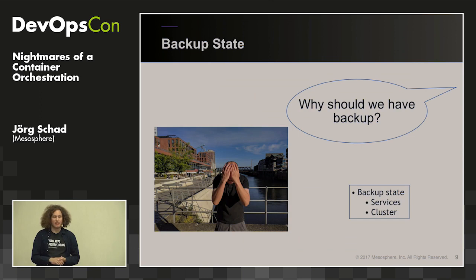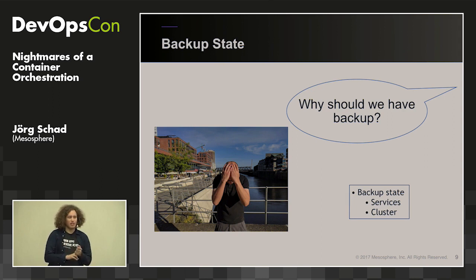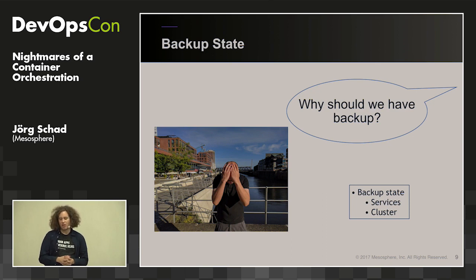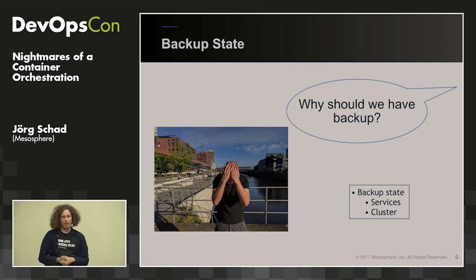The next important thing is backup state. Even though these systems are highly fault tolerant, there can always be issues — missing operator configuration, operator configuration gone wrong, or total outage of multiple data centers. You shouldn't rely on anything being stable, especially in the cloud. What should you backup? Jan is frustrated if we don't have a backup.